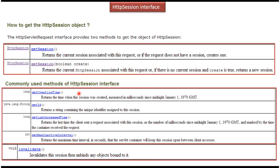Here are some of the commonly used methods of the HTTP session interface. The getCreationTime method returns the time when the particular session was created. The getId method returns the unique identifier assigned to the particular session. The getLastAccessTime method returns the last time the particular session was accessed by the client. The getMaxInactiveInterval method returns the maximum time the servlet container will keep the session open between client and server — after this time, the session object will be removed. The invalidate method invalidates the session object and unbinds any objects bound to it.